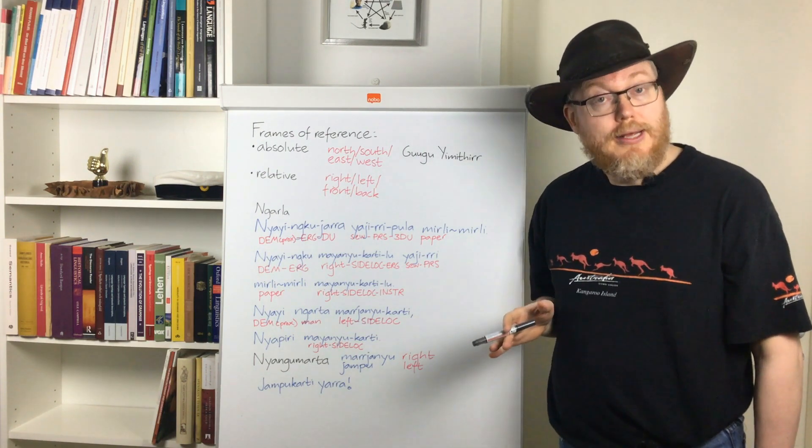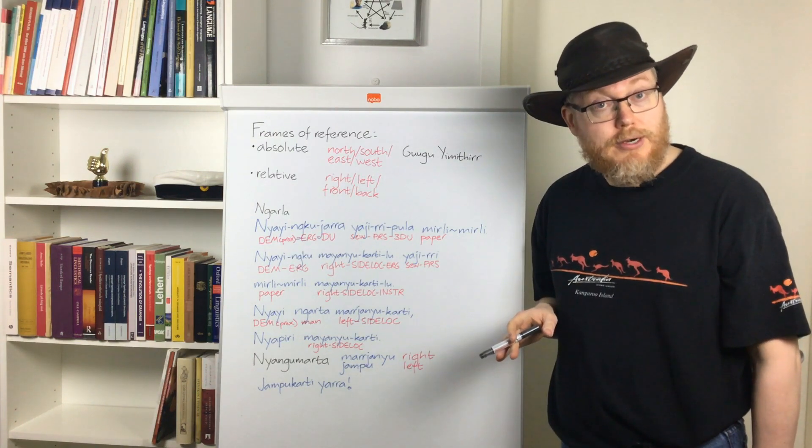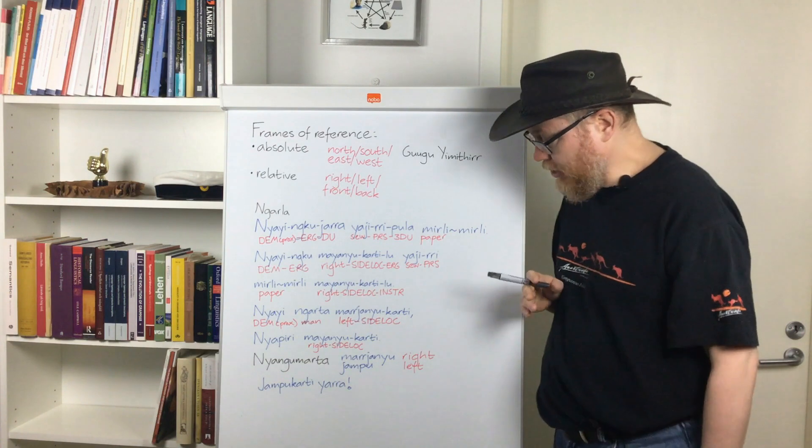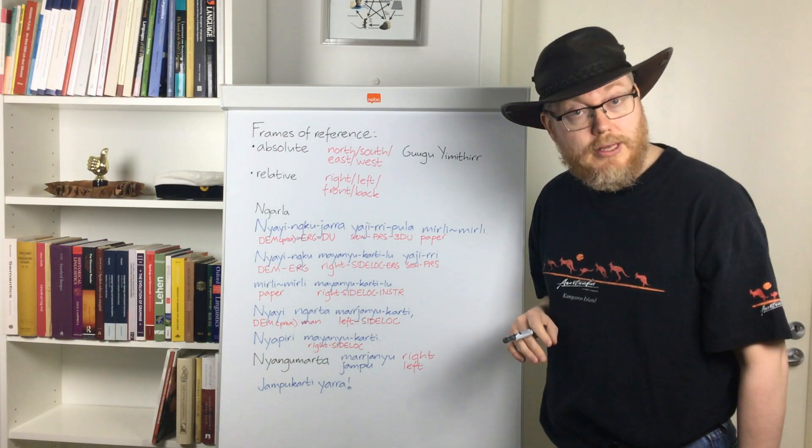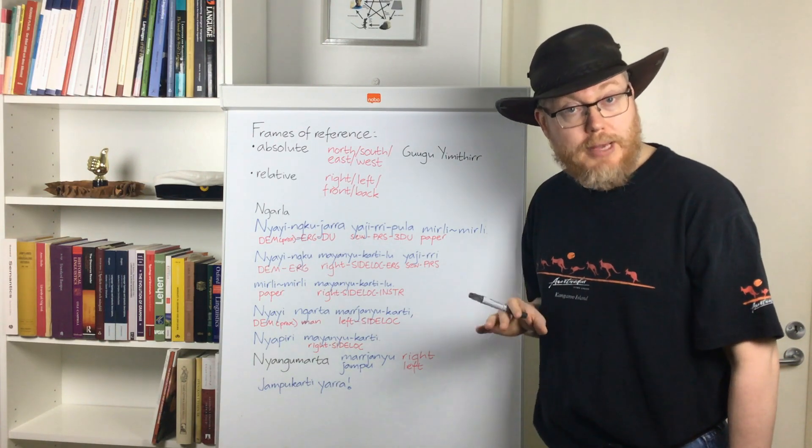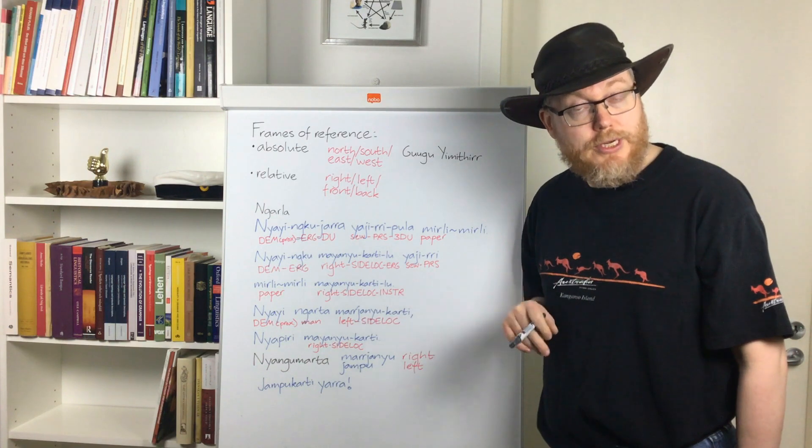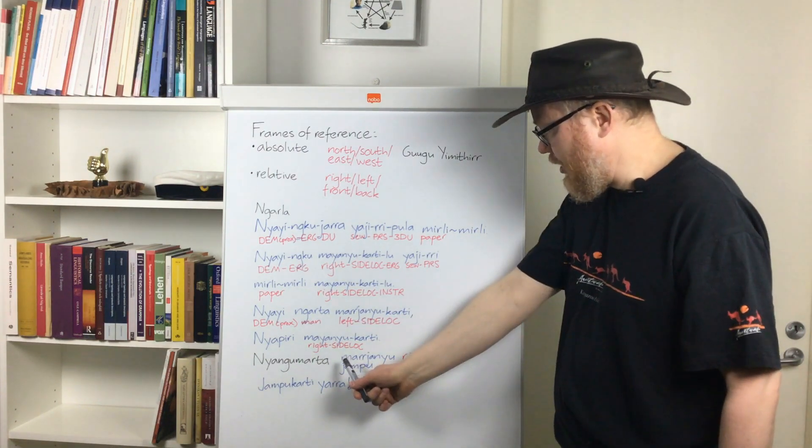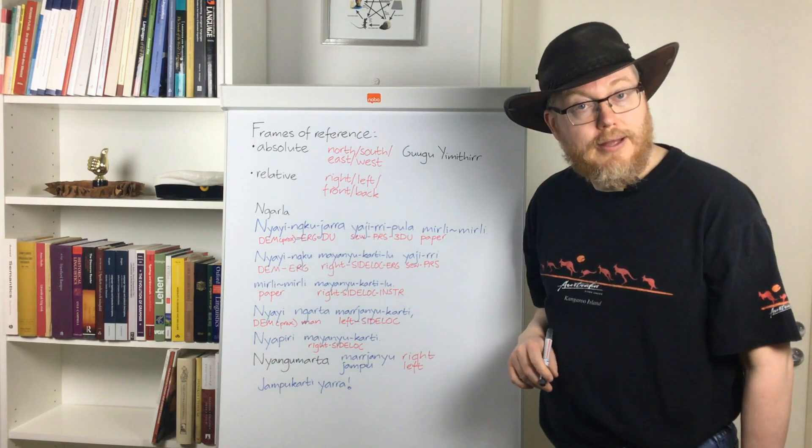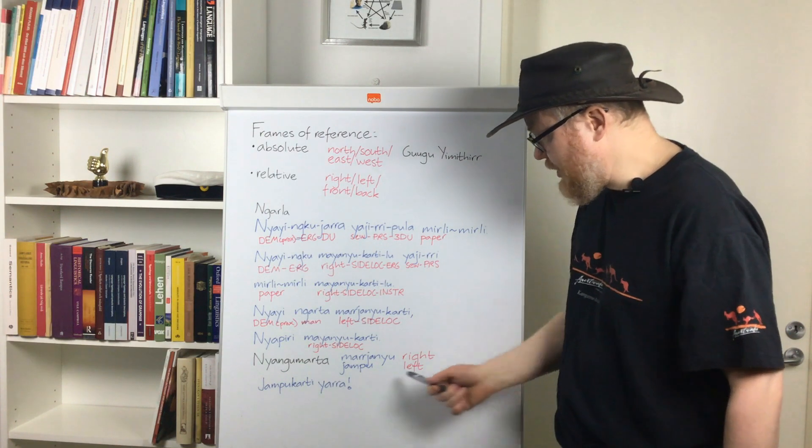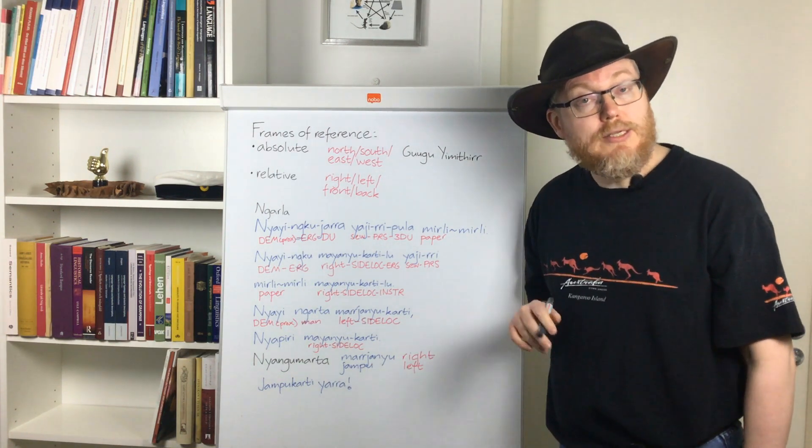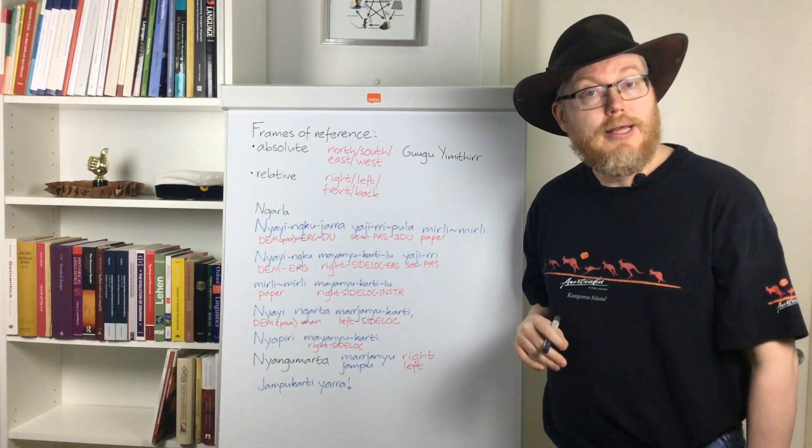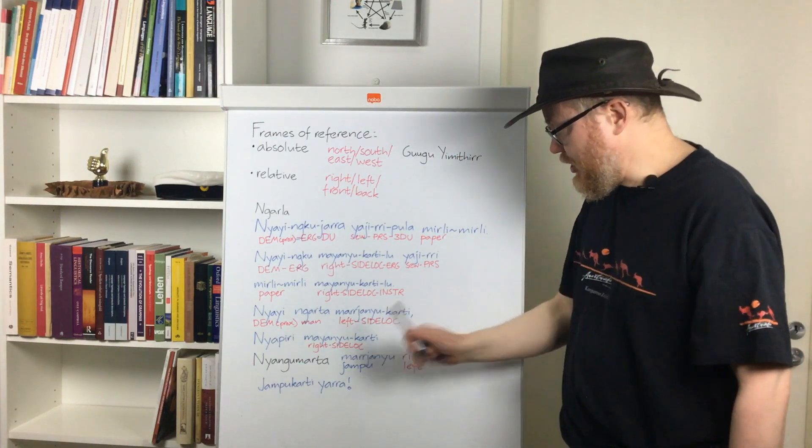If we look at neighboring Nyangumada, we find something that seems to be common when you compare neighboring Australian Aboriginal languages. It seems to be common that they have many of the same words, but often words have opposite meanings in the two neighboring languages being compared. I really don't know why that is, but that seems to be the case. So, here in Nyangumada, marjanyu means right. And the Nyangumada word for left, as it so happens, is jambu, which is also the common greeting in Swahili, the East African Bantu language.